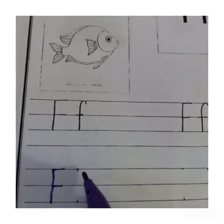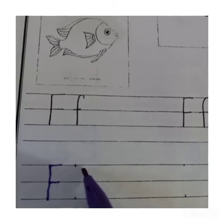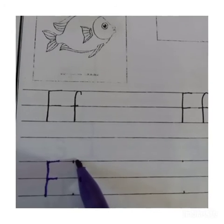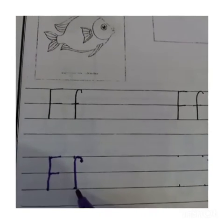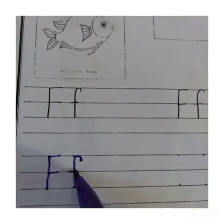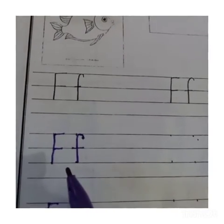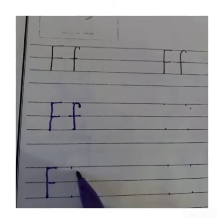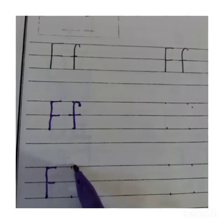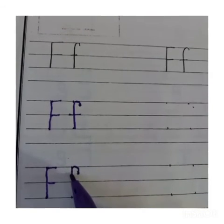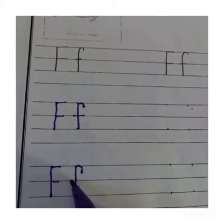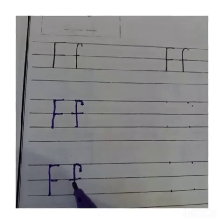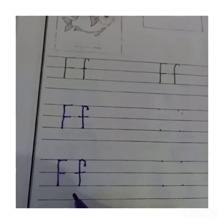Aur yahan par hum likhenge small F. Yahan par ek dot bachcho apni mama se lagwana hai. Is dot par pencil rakhenge, is tarah turn karke is dot par aayenge, aur bilkul straight line yahan par likhni hai. Third line par stop karna hai, aur second line ke centre mein ek choti si line draw karni hai. Yeh kya ban gaya? Small f!